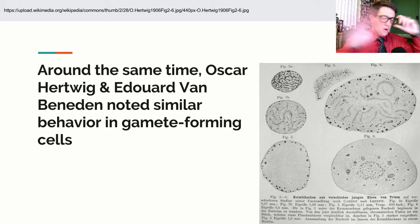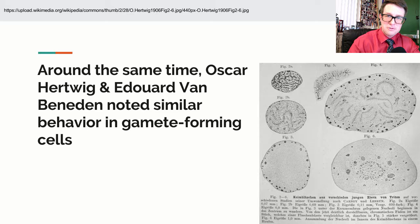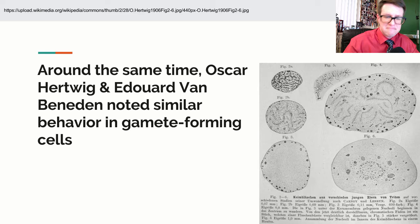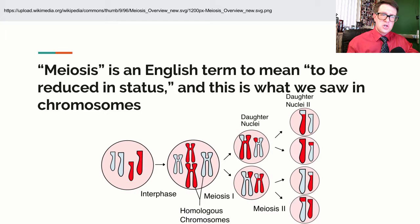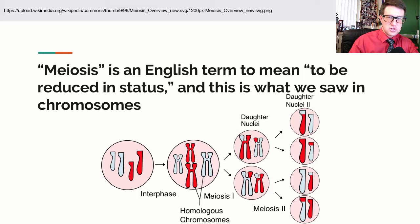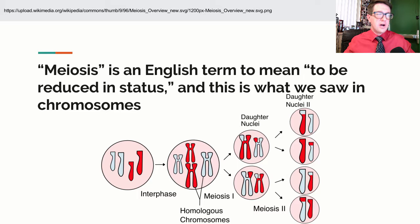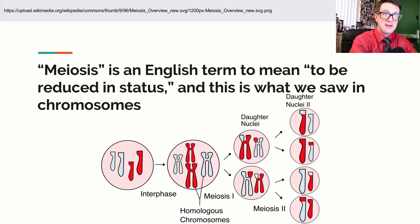Around the same time, Edward Van Beneden was looking at different cells and seeing a different pattern. The cells he observed did this pattern far less often — it was a more specialized thing. What they started to notice was the number of chromosomes at the start and at the end were different. They weren't resulting in the same thing. And what they said was meiosis is occurring — the term meiosis is actually an English word meaning to be reduced or reduced status. We go from four chromosomes to two chromosomes, four individual types down to two. We have a reduction — we have meiosis.